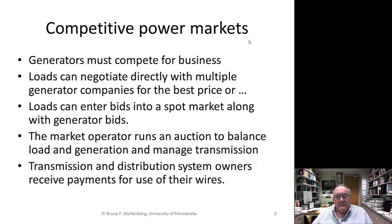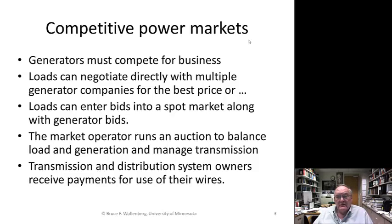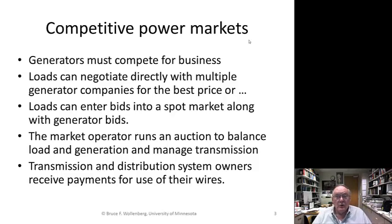The market operator runs an auction to balance load and generation — that's where the crossover of supply and demand occurs. It has to manage the transmission because this kind of system is just-in-time, meaning that the purchase and sale of power must happen simultaneously. Transmission and distribution owners receive payments for the use of their wires.